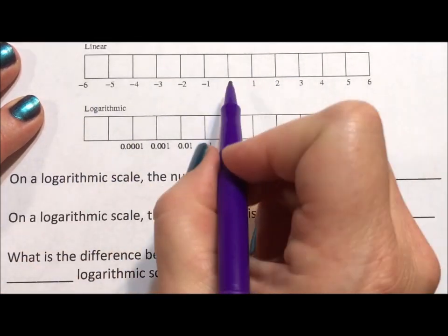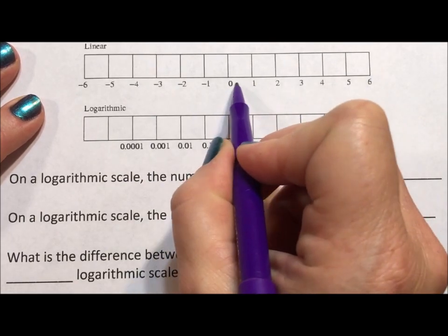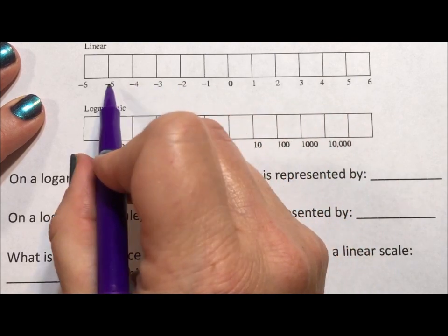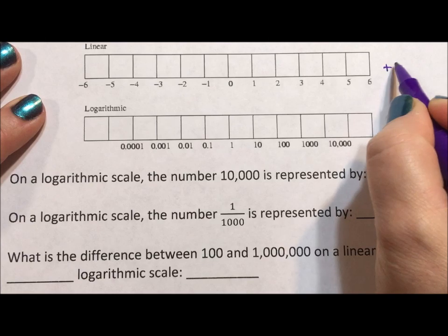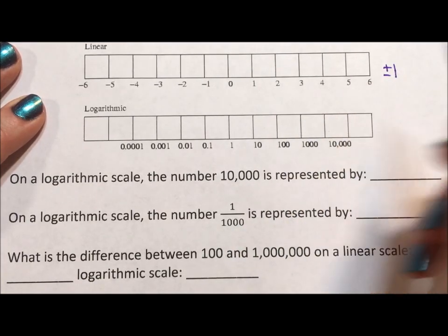In a linear scale, every tick mark on the ruler is a difference of 1: 1, 2, 3, 4, 5, negative 1, negative 2, negative 3, negative 4, negative 5. It's scalar. We're adding 1 to move up and down, or subtracting 1 to move up or down the scale.